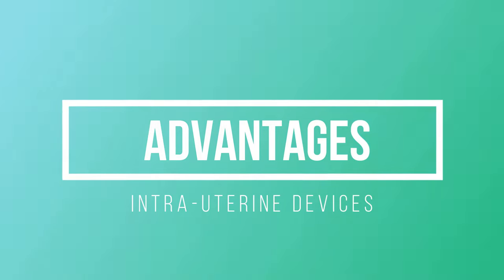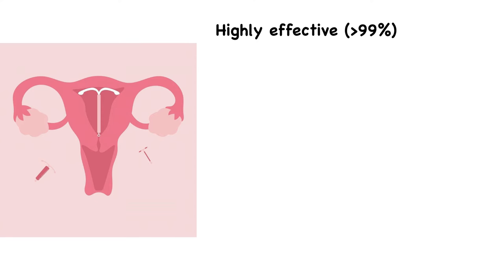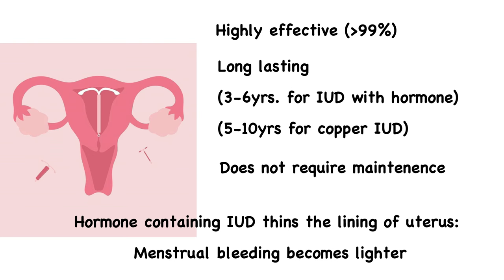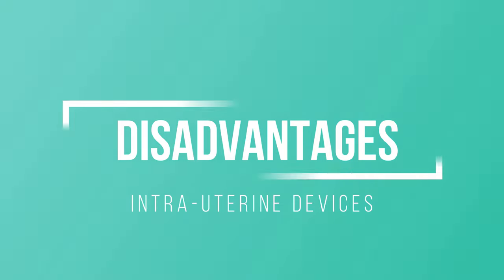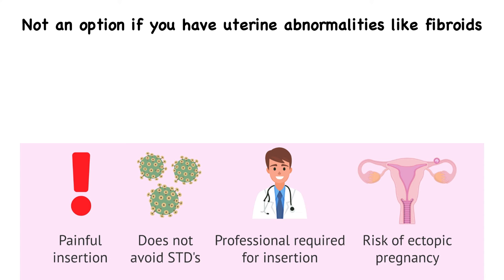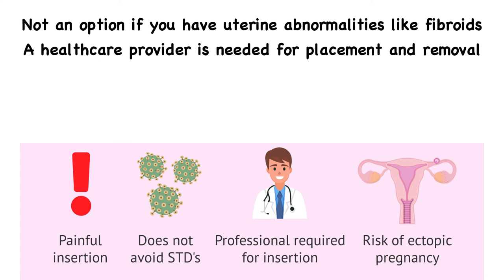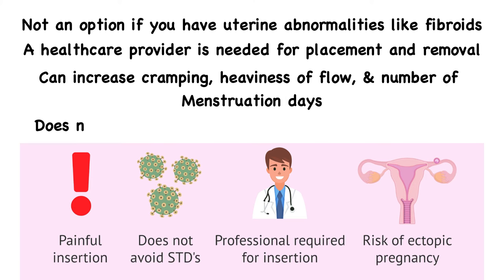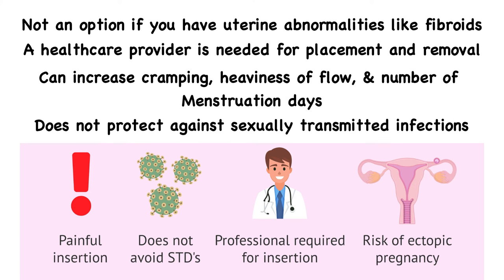The advantages of IUDs are that they are highly effective, long-lasting, and do not require regular maintenance. The hormones contained in the IUD also thin the lining mucosa of the uterus, so menstrual bleeding becomes lighter. The disadvantages are that it is not an option if you have uterine abnormalities like fibroids, a healthcare provider is needed for removal, it can increase cramping and heaviness of flow, and it does not protect against sexually transmitted infections.